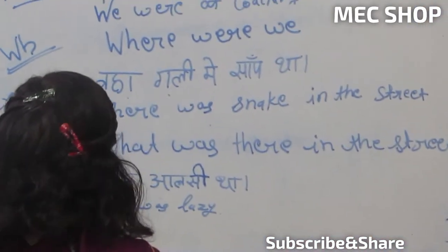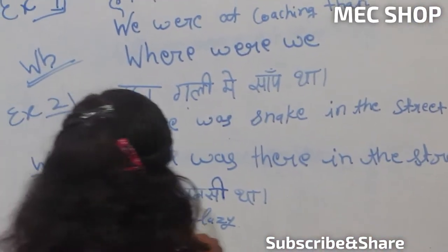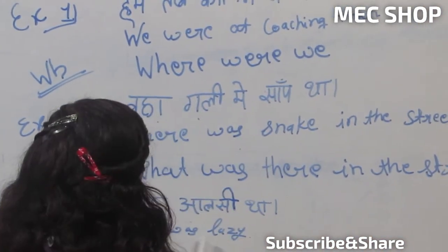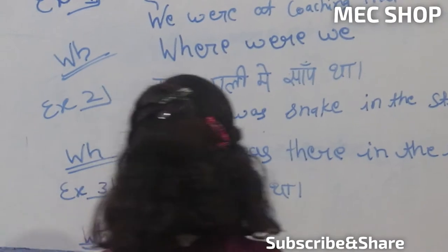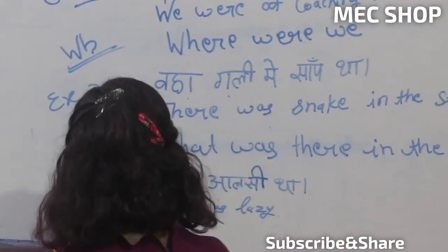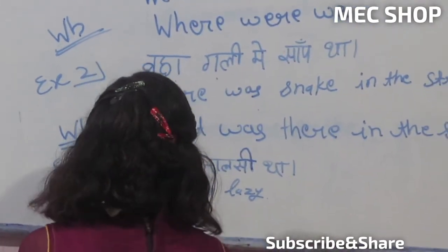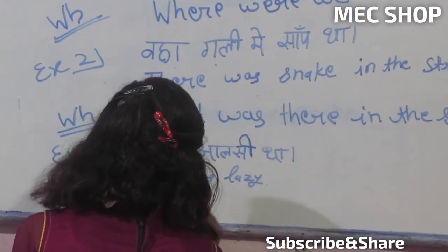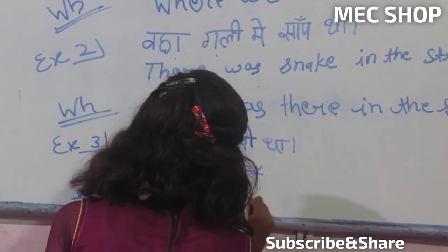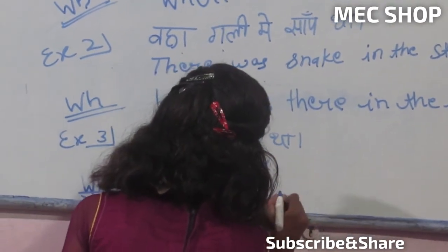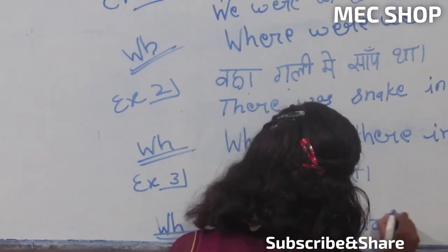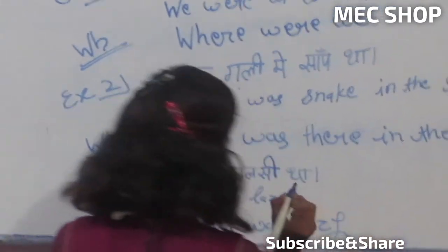Example third: Waha aasi tha. He was lazy. W.H. question: What was he? He was lazy.